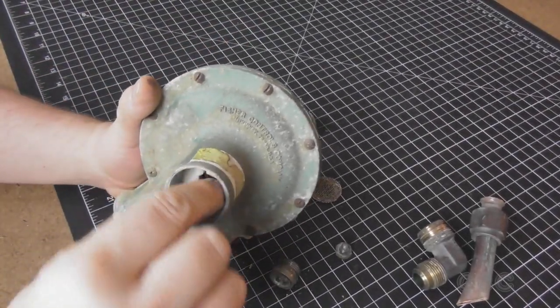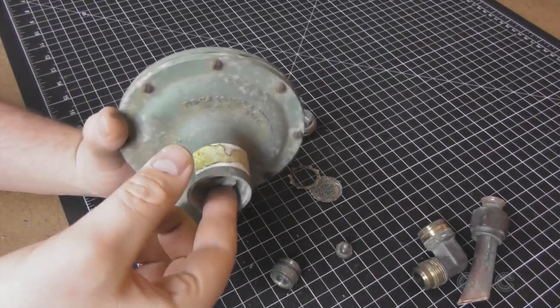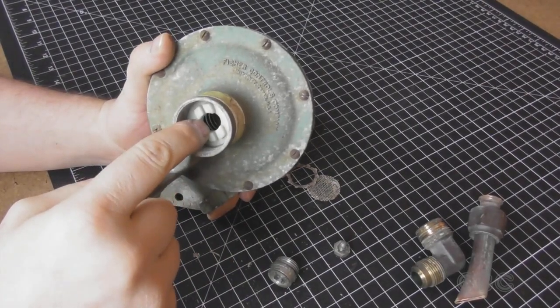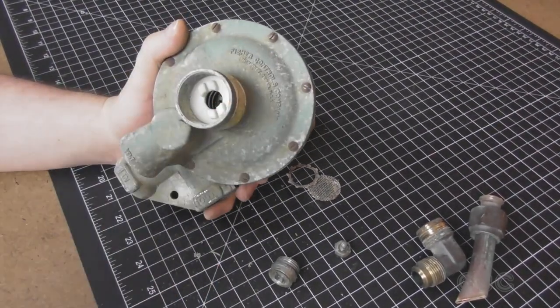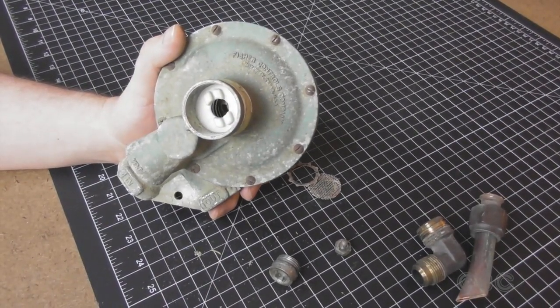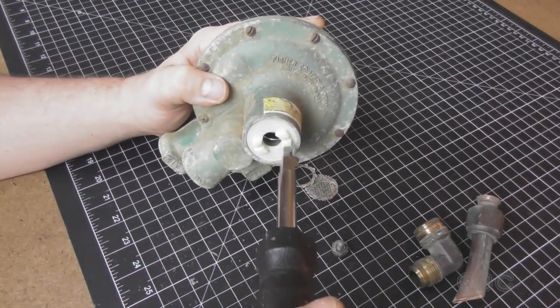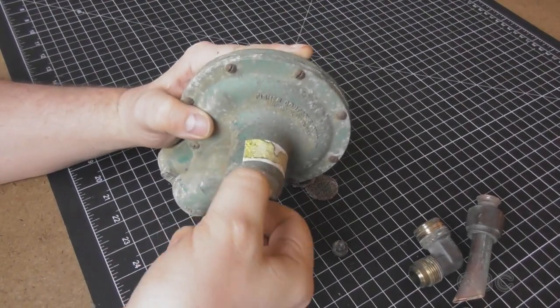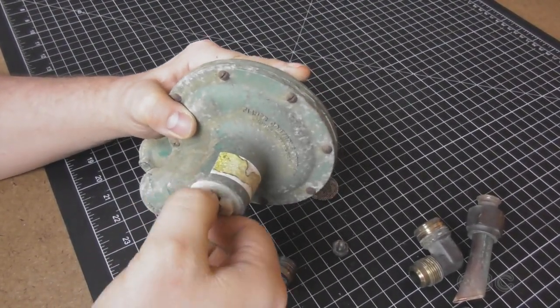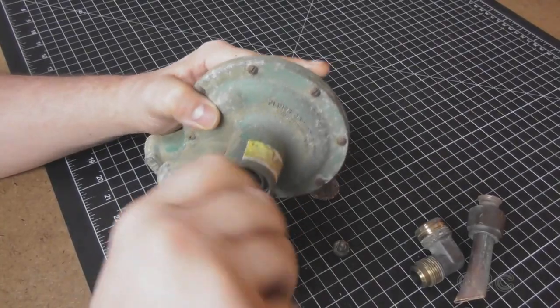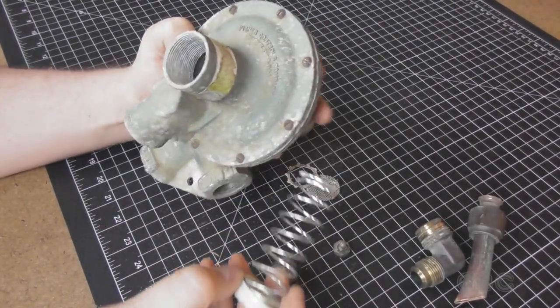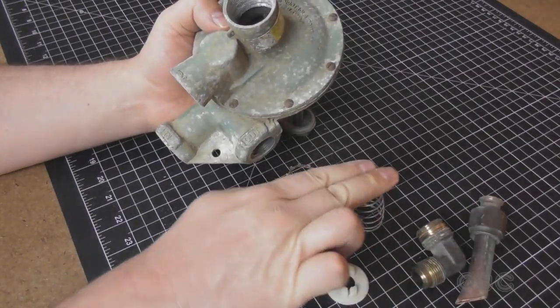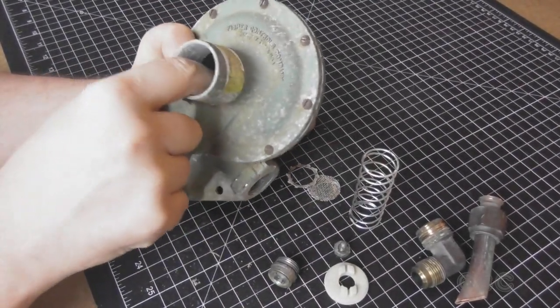So this plastic nut in here is for adjusting the pressure and it's pressing against a spring. I'm going to undo that then we'll take the screws off. It's easy enough to back it out with a screwdriver. Take it off the rest of the way and there's the spring. And that's pressing on a rubber diaphragm in there.